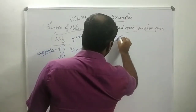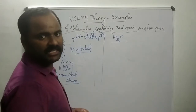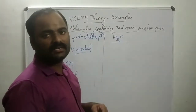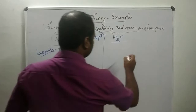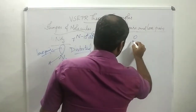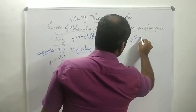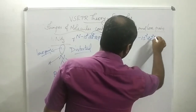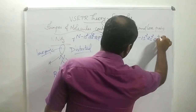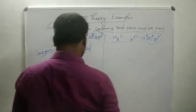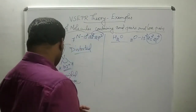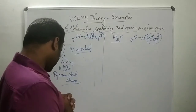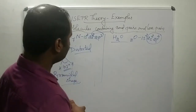The next example is water, H2O. Oxygen is the central atom, with atomic number 8 and electronic configuration 1s2 2s2 2p4. Oxygen has six electrons in its valence shell.